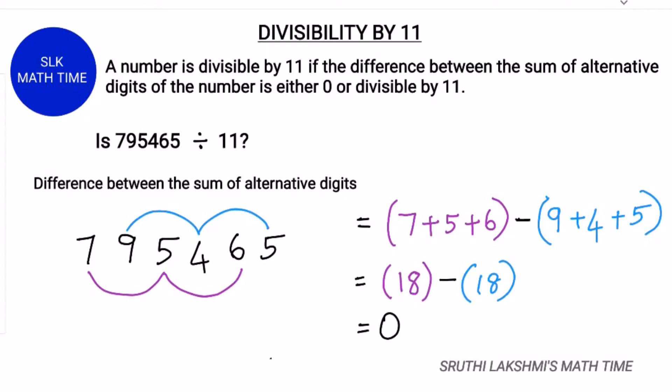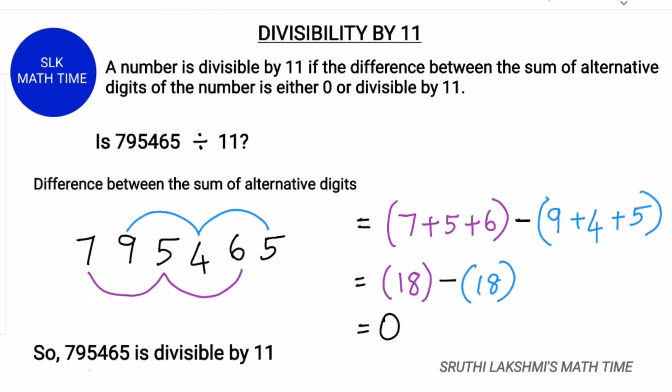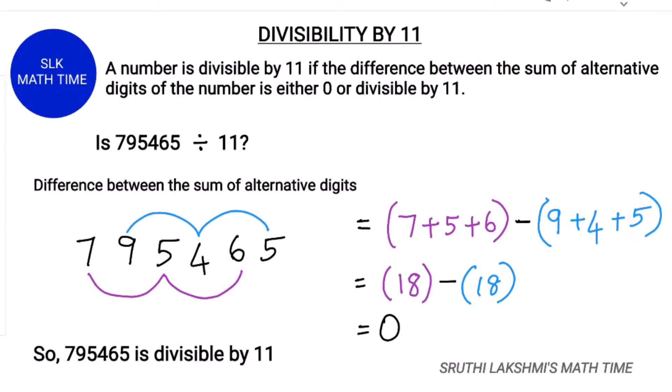Since 0 is divisible by 11, 795465 is also divisible by 11.